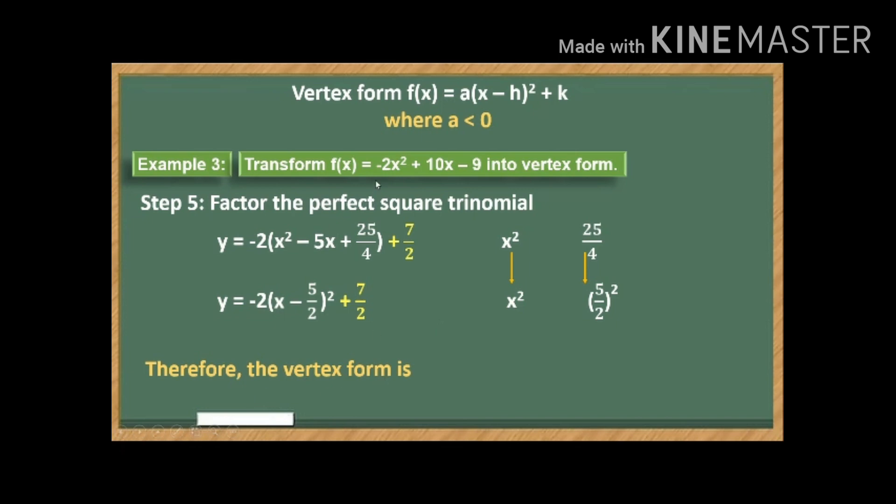So, therefore, the vertex form of negative 2x squared of the function defined by negative 2x squared plus 10x minus 9 is y equals the product of negative 2 and the square of the difference of x and 5 over 2, then plus 7 over 2. So that's it for our example number 3.